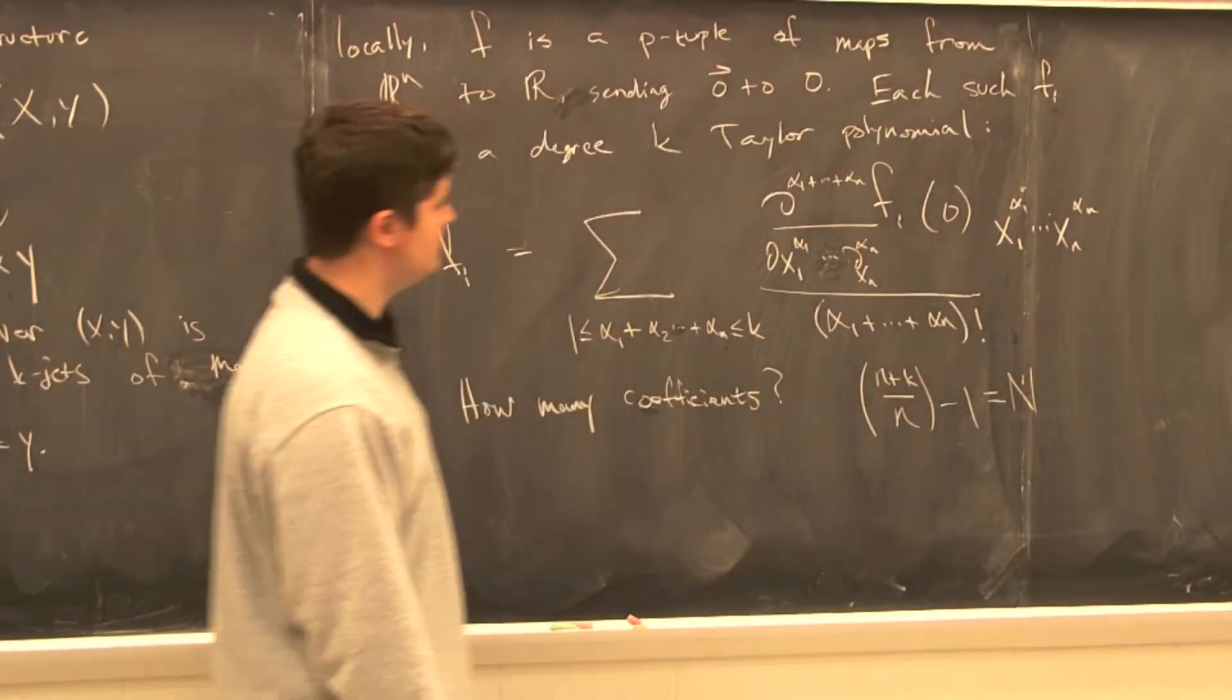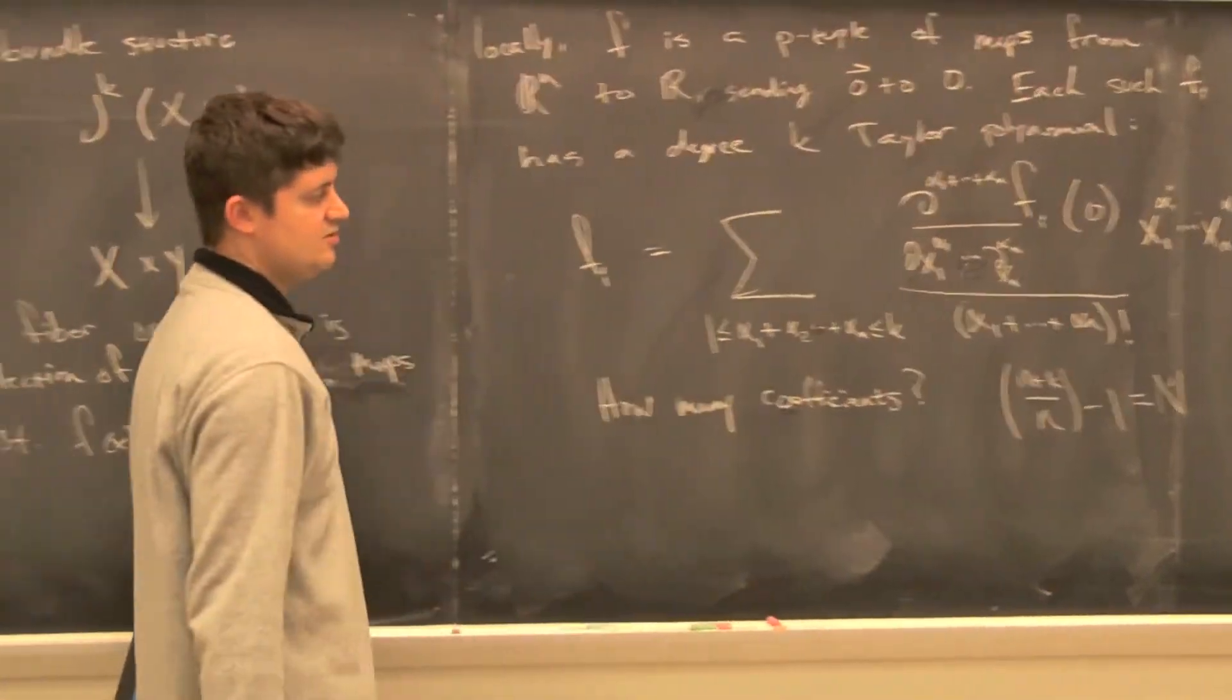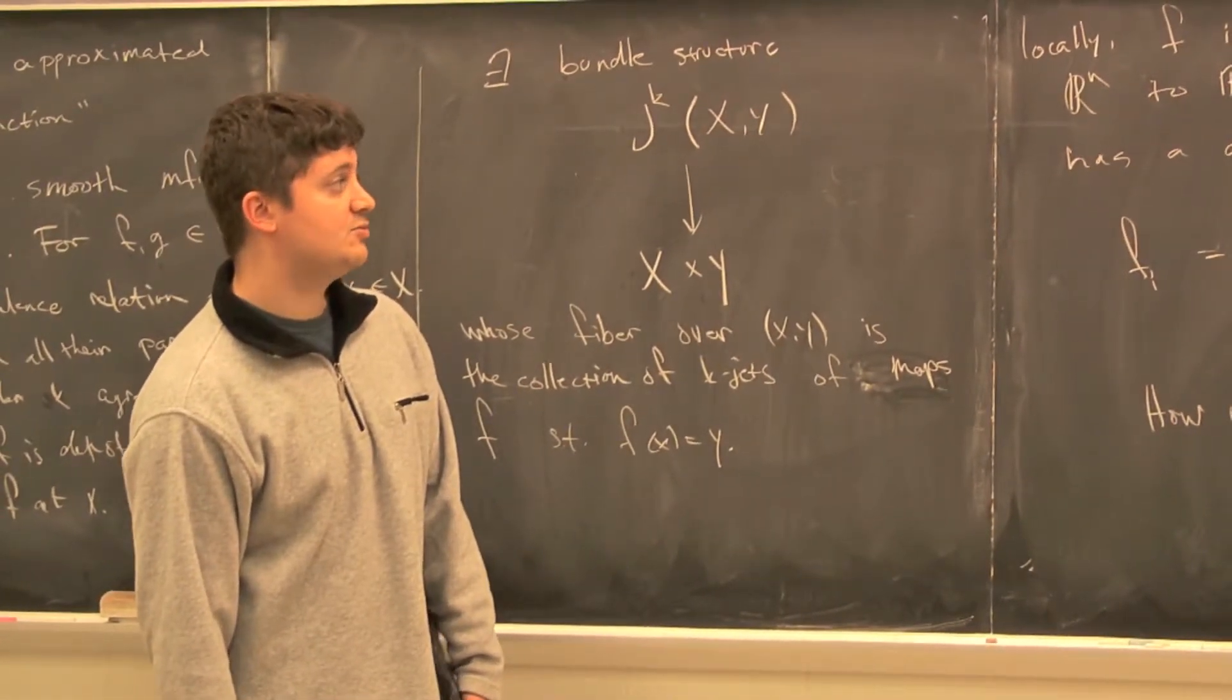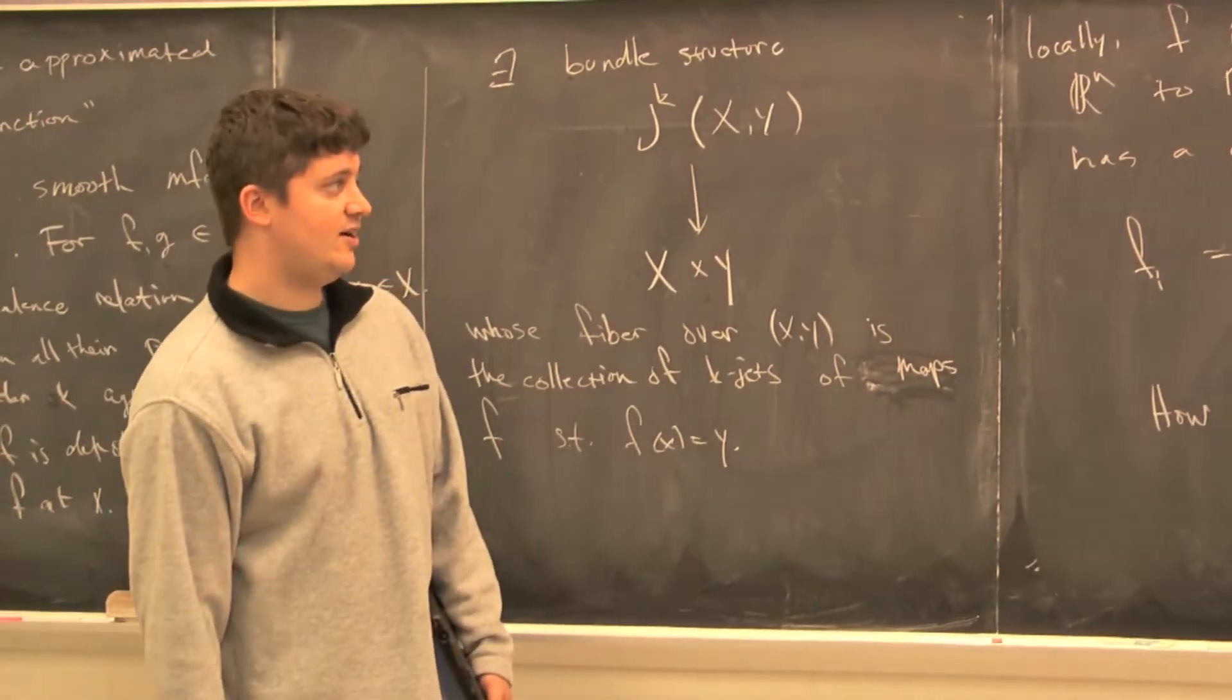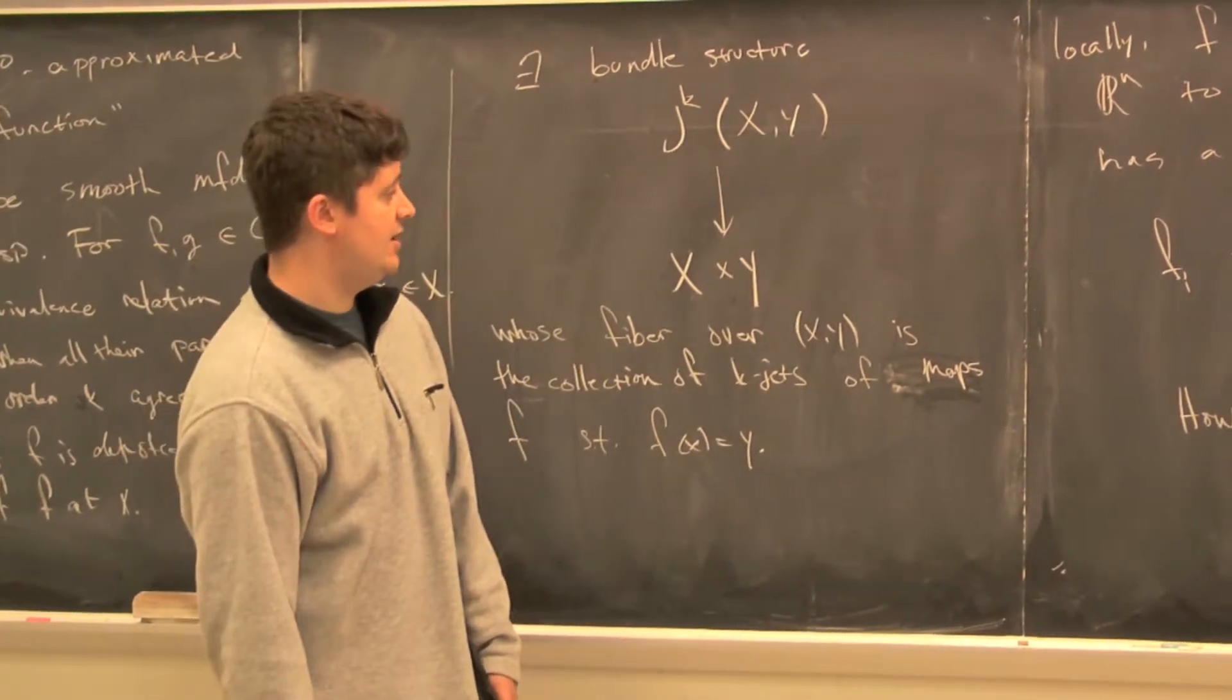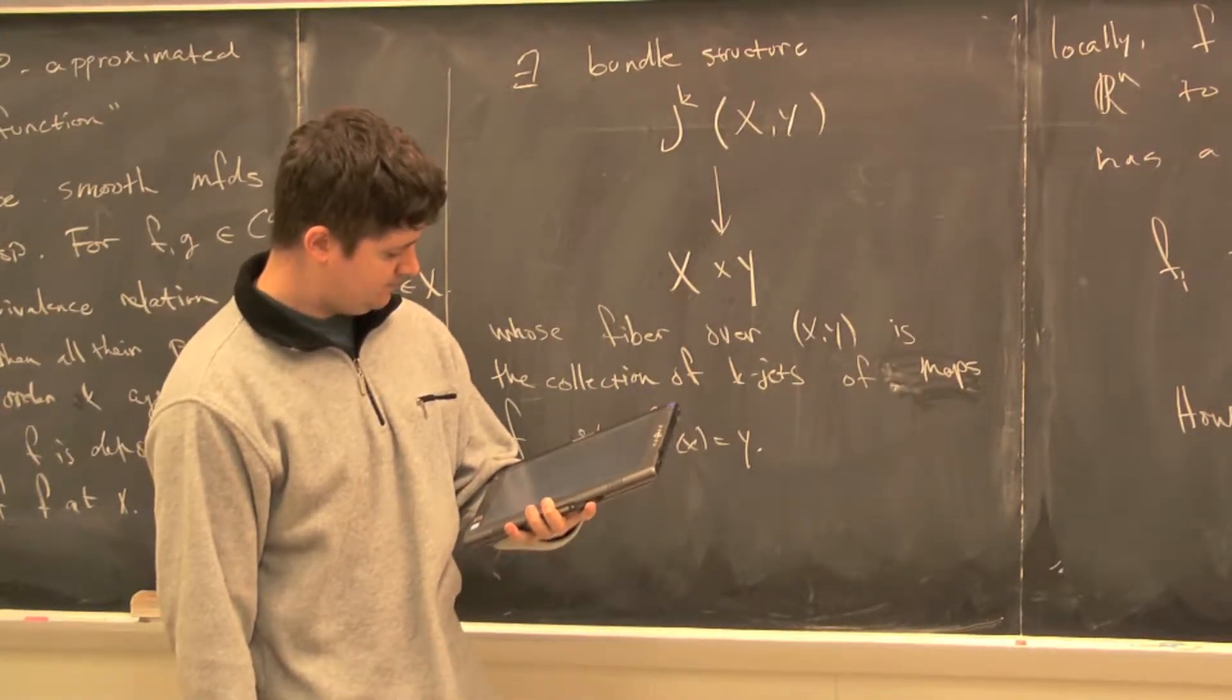I'm telling you that you have a bundle structure, but actually, since you can pick your coefficients, you're getting a homeomorphism. I'm defining a topology of a fiber by saying, parameterize the fiber as R^N.